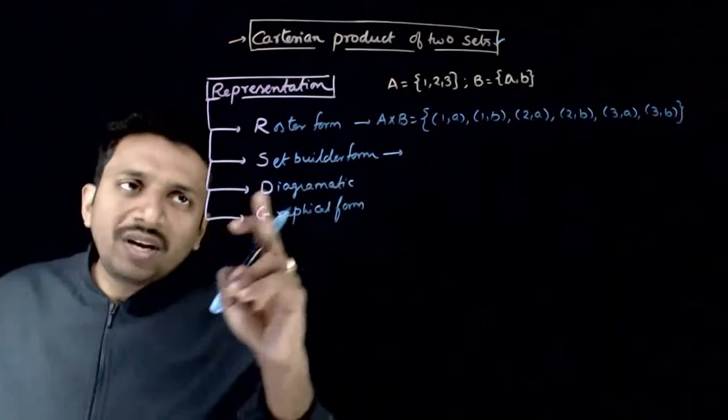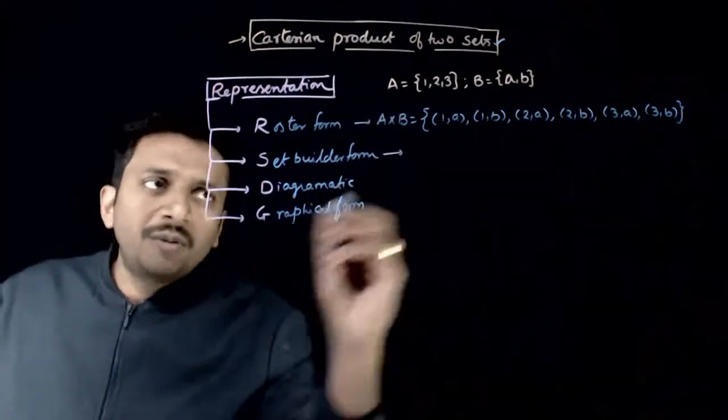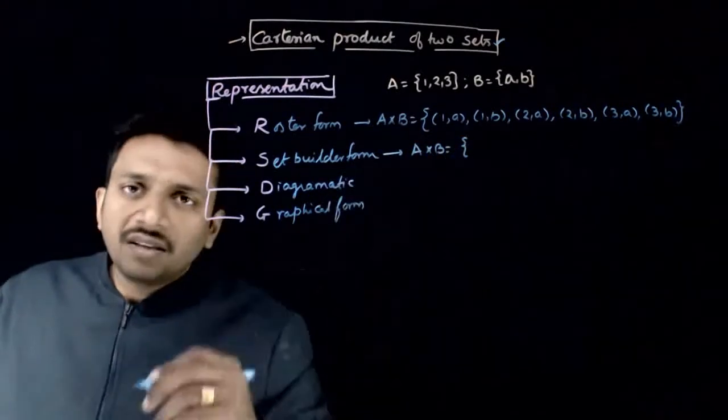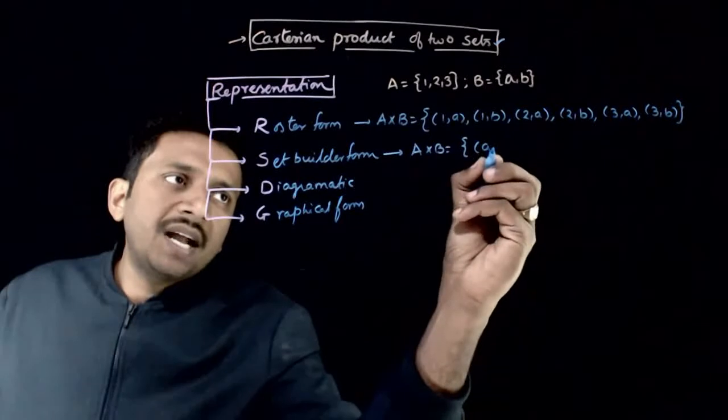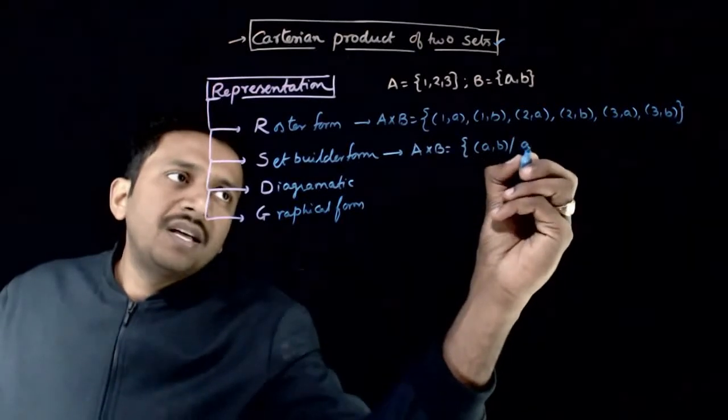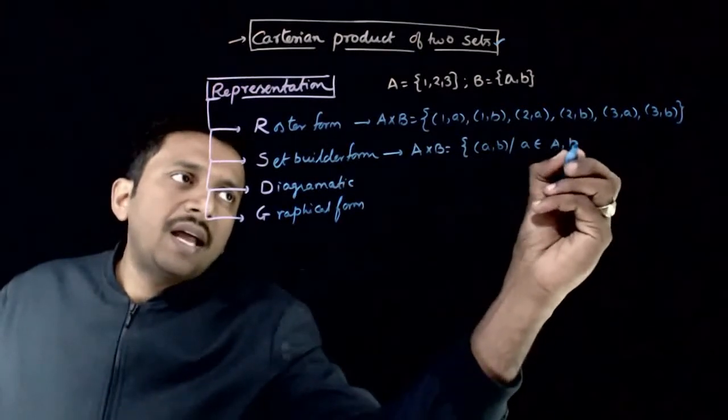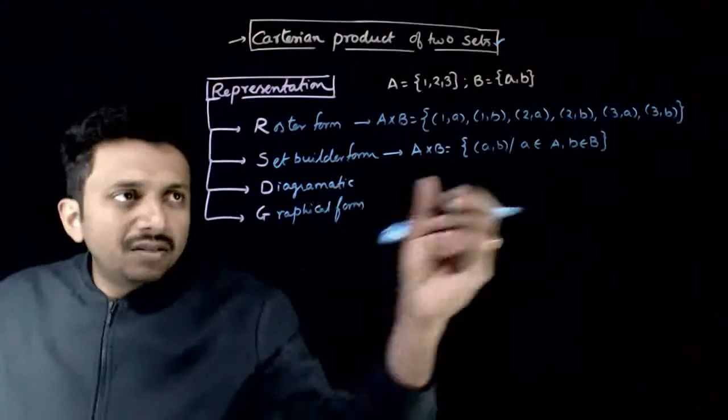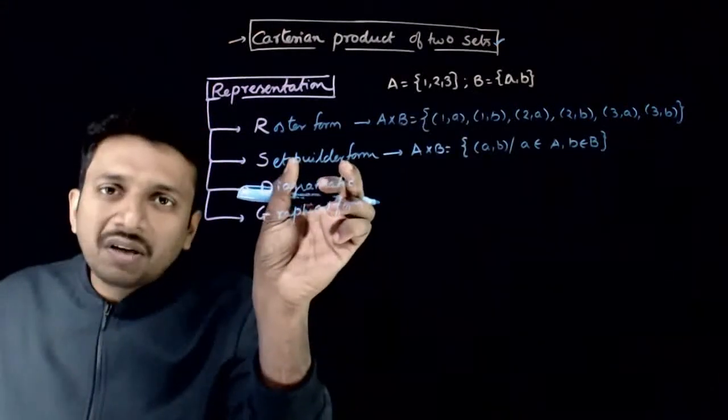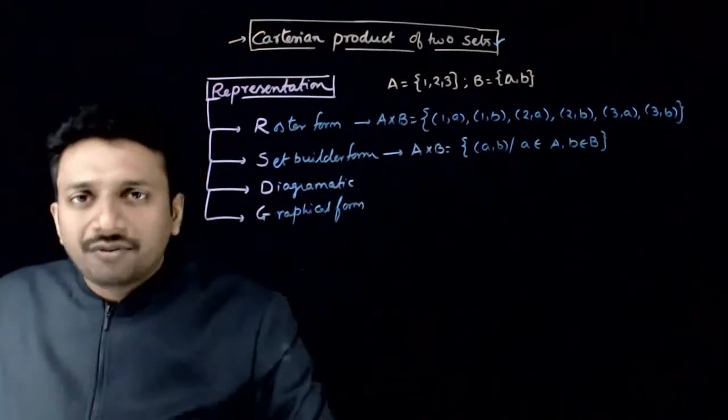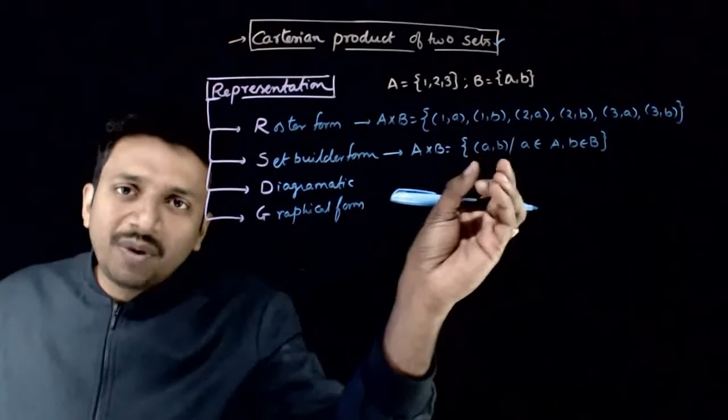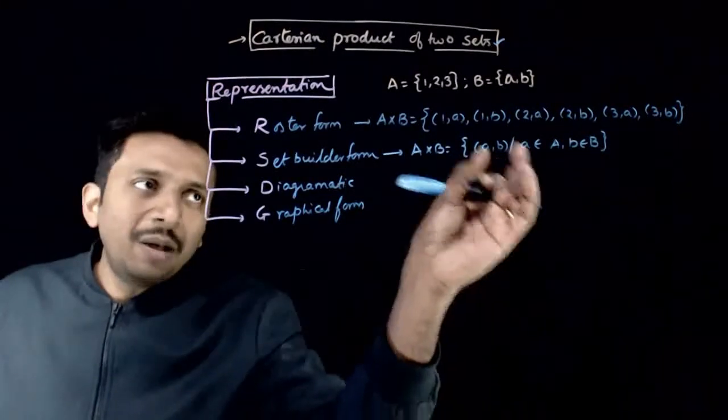Next, how do I represent A x B in Set Builder Form? You don't write individual elements. Just write A x B is equal to a set containing A comma B such that A comes from A and B comes from the set B. This is the definition of A x B. The definition of A x B is in Set Builder Form. As we have seen in Set Theory, this looks like a set builder form. From this, we can build the set.